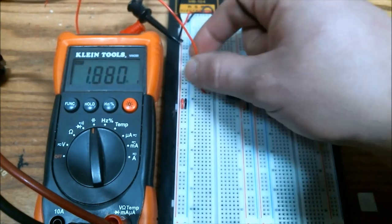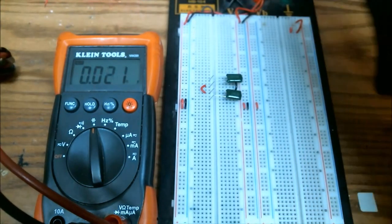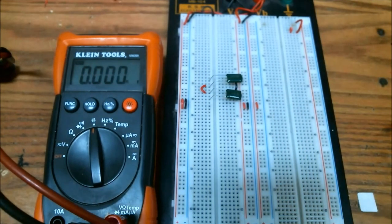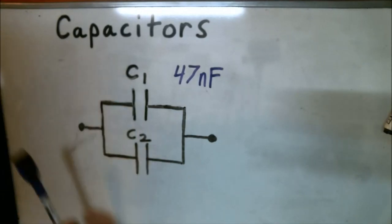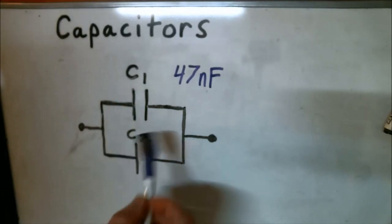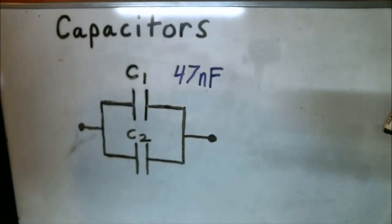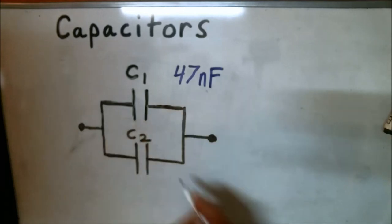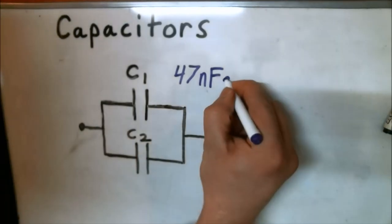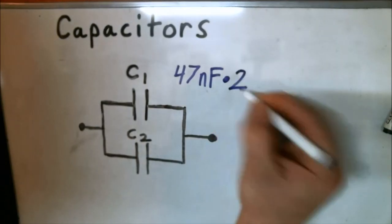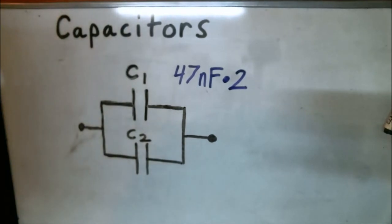Alright, now let's do some parallel analysis here. This time around we have C1 and C2 in a parallel configuration. And again, they are 47 nanofarads each. So the value of these two would be 47 times 2. So that would be 94 nanofarads. So let's go ahead and measure that as well.